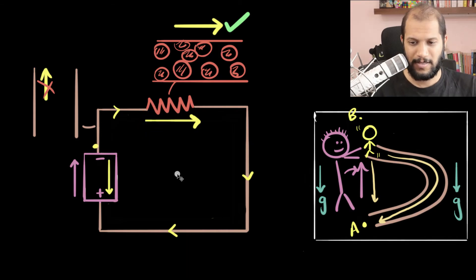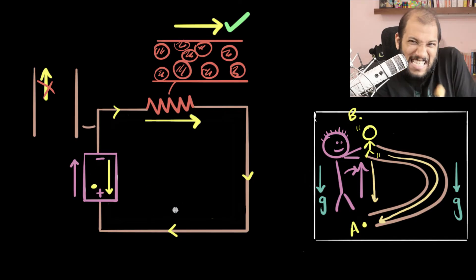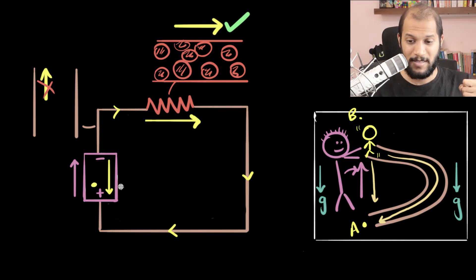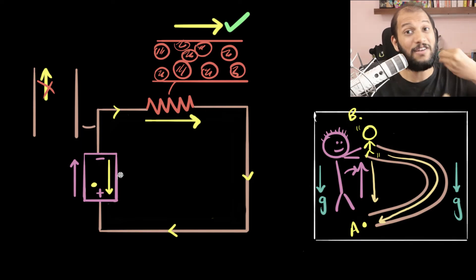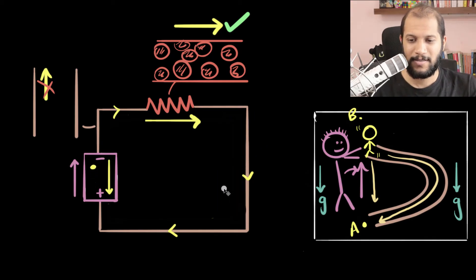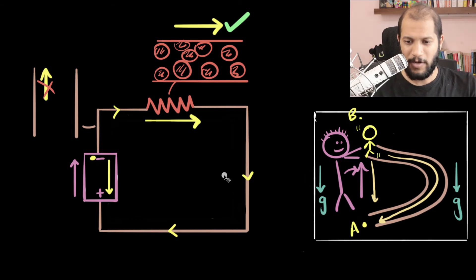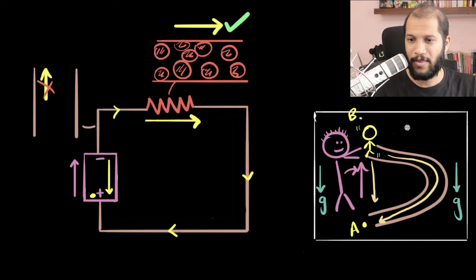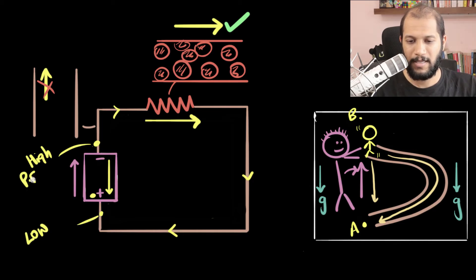The same thing happens in the circuit. As the electron goes against the electric force inside the battery, the electric force saps energy from the electron, and that energy came from the chemical reactions — storing it as potential energy. So the potential energy of the electron increases as it moves through the battery. We can say at the negative terminal, the electrons have high potential energy, and at the positive terminal, low potential energy.